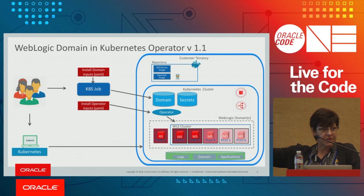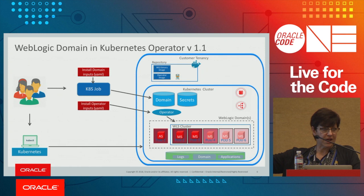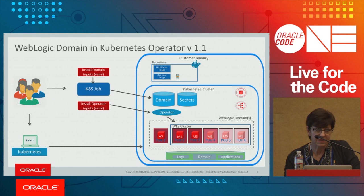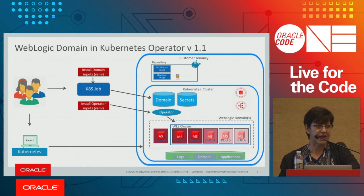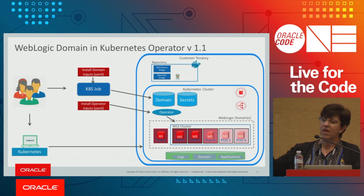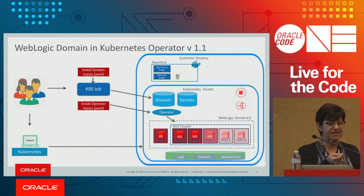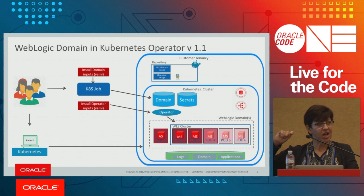A script starts a Kubernetes job that creates a persistent volume for log persistence, creates the WebLogic domain in that persistent volume, and stores application binaries. The job also creates a domain custom resource, which extends Kubernetes APIs on behalf of that domain. Once the domain resource is created, the operator observes it and immediately stands up the WebLogic domain.